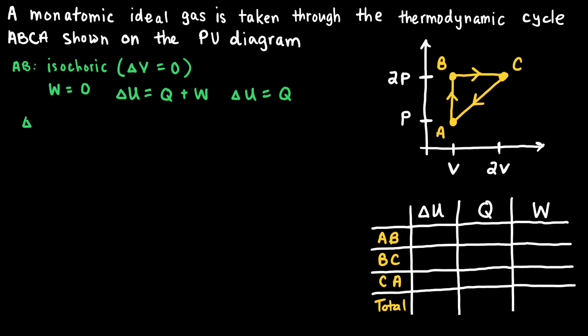For a monatomic ideal gas, the change in internal energy is also given by three-halves times N times k times the change in temperature, where the three represents the degrees of freedom, N is the total number of particles, and k is Boltzmann's constant. The change in temperature tells us about the change in the internal energy of the gas.